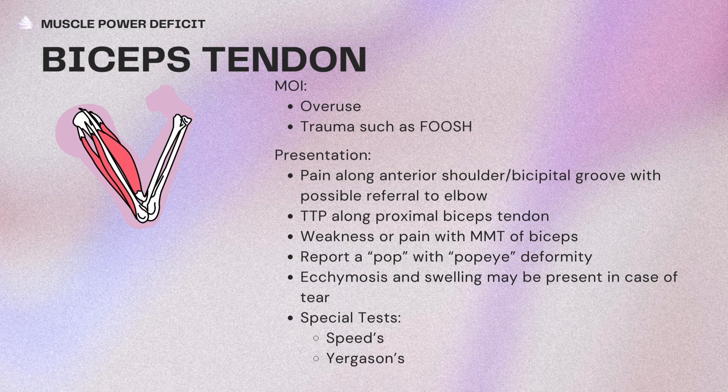Special tests to determine biceps tendon involvement would be Speed's and Yergason's. For medical management, they would get an x-ray to examine bony morphology, arthritic changes, and bone spurs, or they might take NSAIDs or get a cortisone injection. For surgery, if there is a rupture, they might have to do a tenodesis — re-anchoring the tendon back — or do a biceps tenotomy, which is just cutting the tendon.